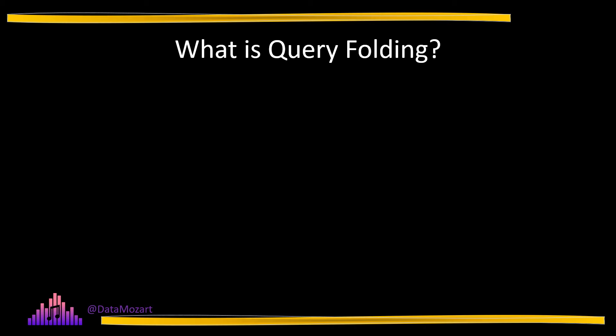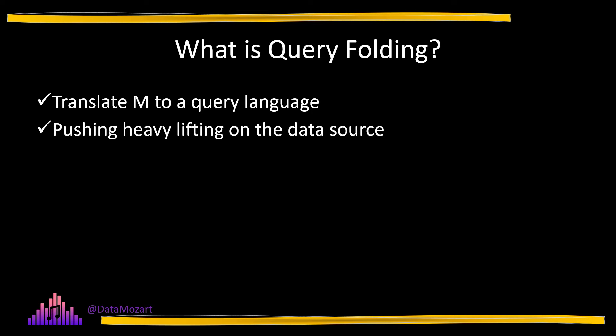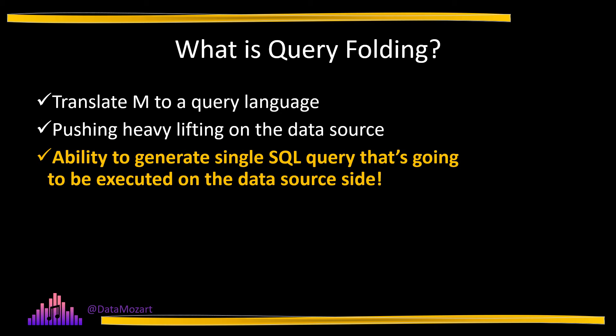For some data sources such as relational databases, but also non-relational data sources like OData, Active Directory, or Exchange, the Mashup Engine is able to translate M language to a language that the underlying data source will understand — in most cases, SQL. By pushing complex calculations and transformations directly to the source, Power Query leverages the capabilities of robust relational database engines built to cope with large volumes of data in the most efficient way. That ability of Power Query's mashup engine to create a single SQL statement combining all the transformations is what we call query folding. Simply put: if the mashup engine is able to generate a single SQL query to be executed on the data source side, we say that the query folds.